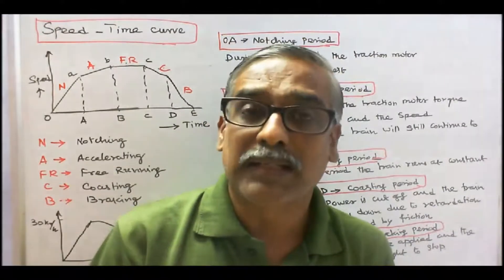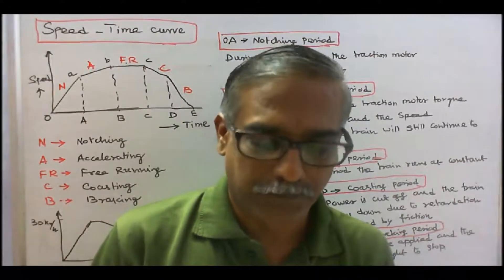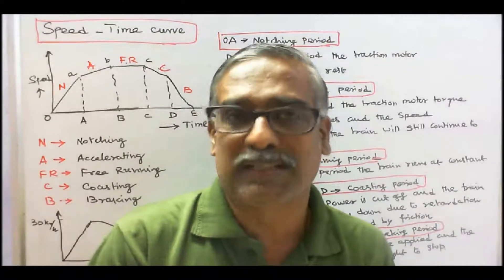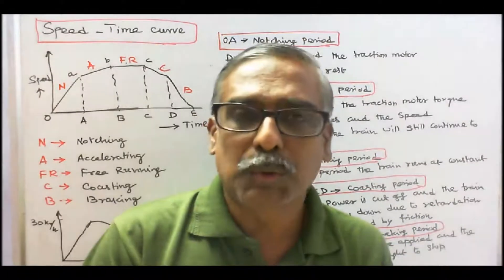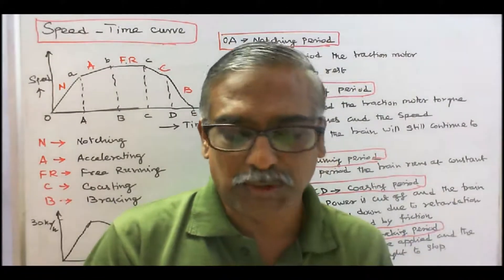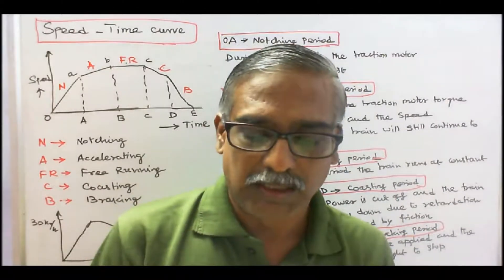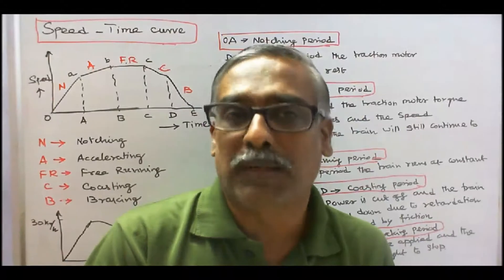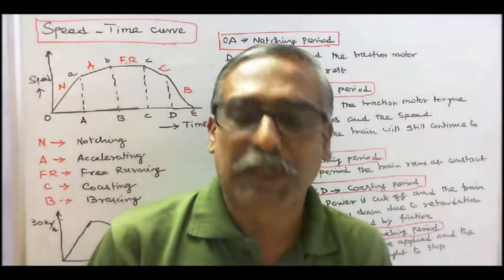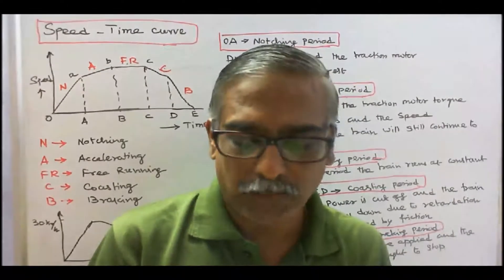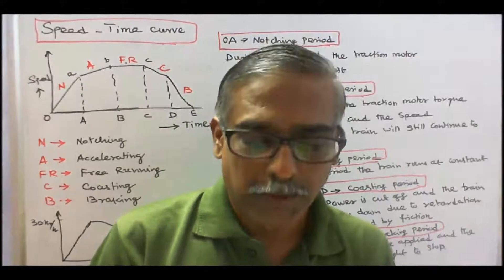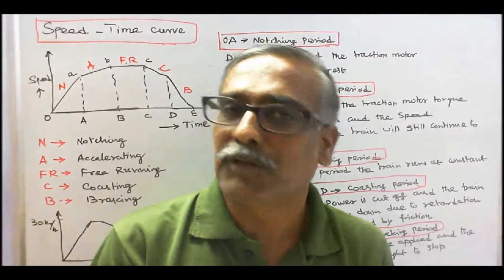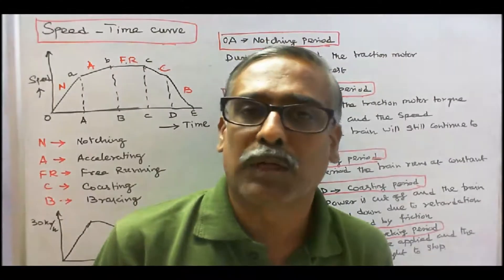Schedule speed is the ratio of distance between two destinations to the total time taken to cover the distance, including time wasted in stoppages. The schedule speed of a train depends on peak speed, acceleration, braking retardation, and duration of stoppages. Now we will work out the problems.